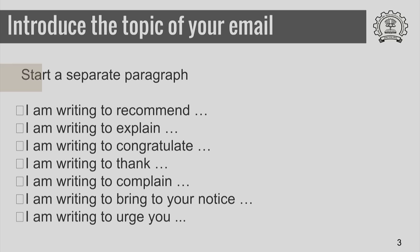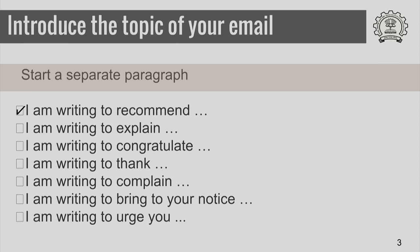The second thing you should do is introduce the topic of your mail, and you should always start a separate paragraph for this. That paragraph should clearly indicate what you are trying to achieve through the mail. Sometimes people write several paragraphs but the receiver is not clear what is expected. So it is always good practice to clearly state your purpose: for example, 'I am writing to recommend so and so for this position.'